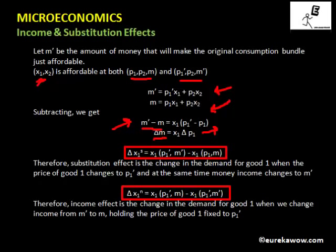Therefore, we have the income effect as the quantity of good one demanded at P1 dash, P2, M minus the quantity of good one demanded at P1 dash, M dash, P2. The income effect is the change in demand for good one when we change the income from M dash to M while holding the price of good one at P1 dash and the price of good two at P2.